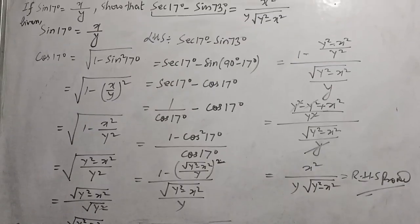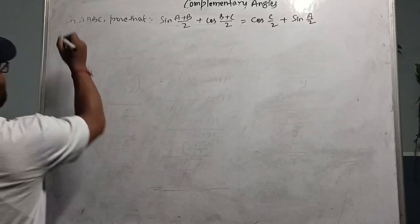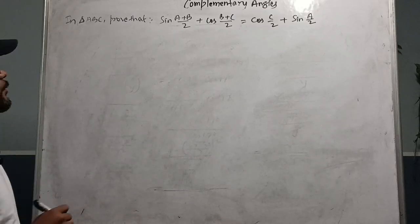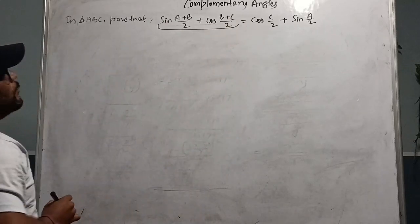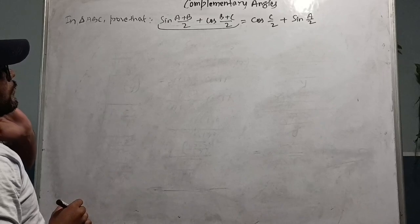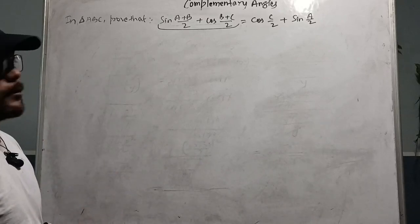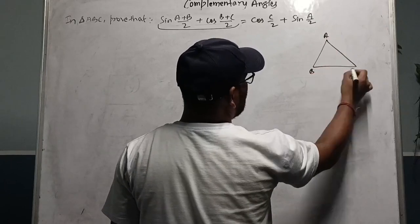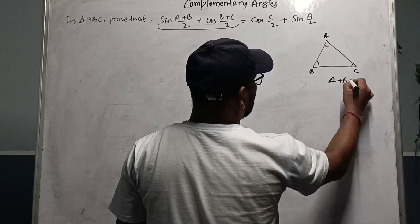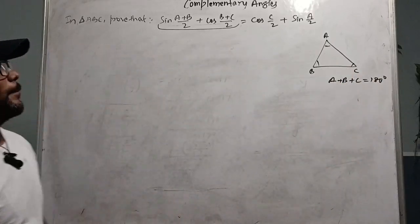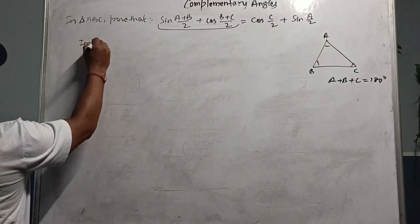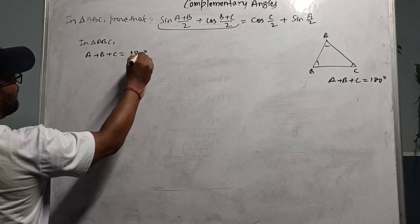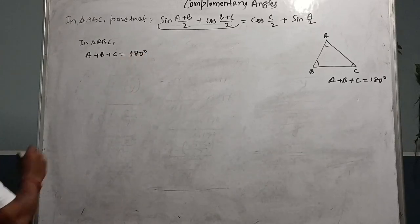Next question, which appeared in the 2012 board examination: given sin((A+B)/2) + cos((B+C)/2) = cos(C/2) + sin(A/2). In a triangle ABC, the angles A, B, and C satisfy A + B + C = 180°, which equals two right angles.